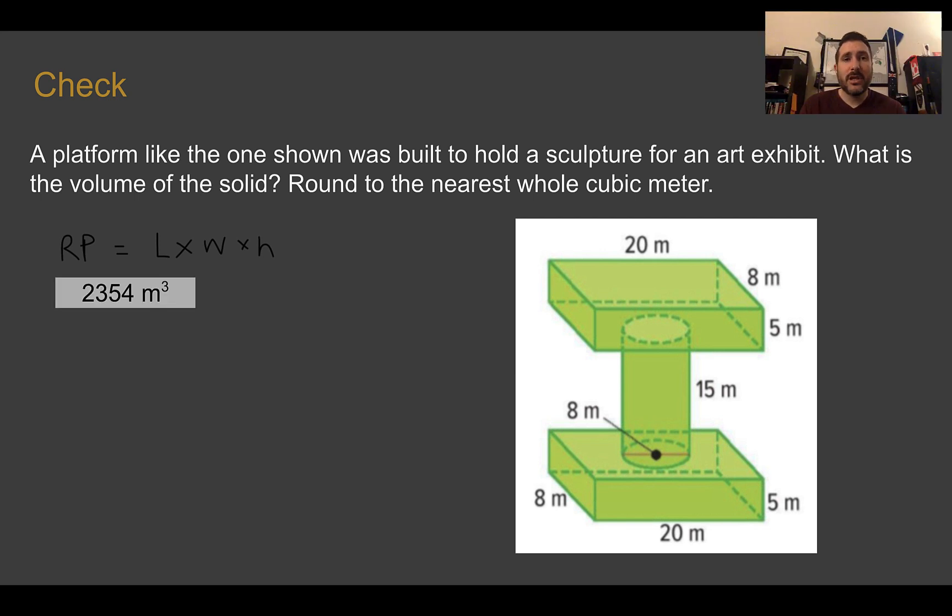Check your answer. You should have said the volume of this structure is about 2,354 cubic meters. This time, I wanted it to the whole meter, so no decimals. For the two rectangular prisms, we have a length of 20 times a width of 8 times a height of 5. Multiplying those out, that's 40, 40 times 20 is 800. And then we have two of them, so the two rectangular prisms were at 1600.